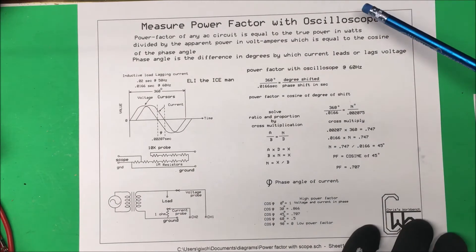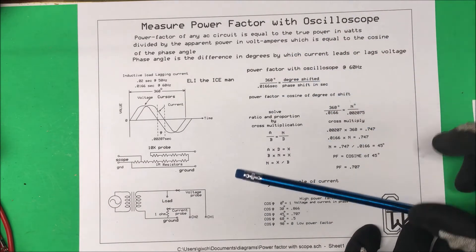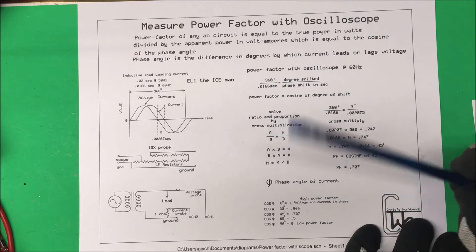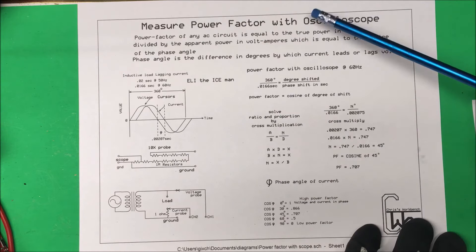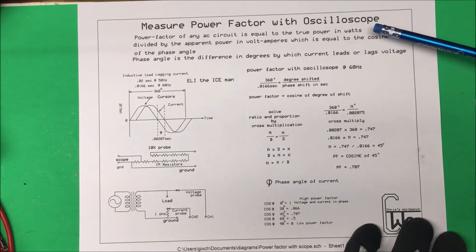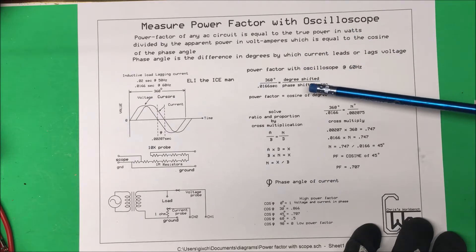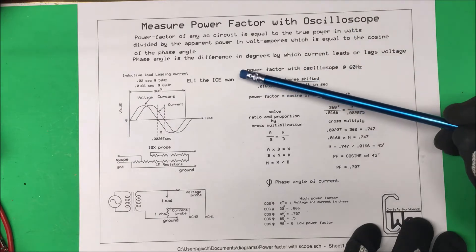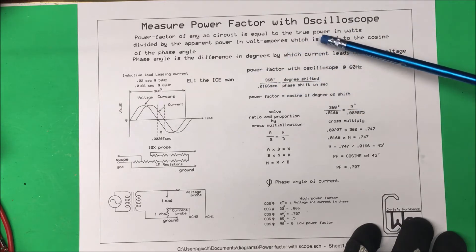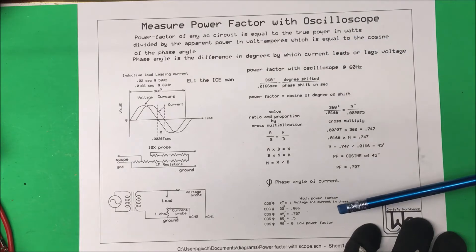Let's measure your power factor with an oscilloscope. The power factor of any AC circuit is equal to the true power in watts divided by the apparent power in volt-amps, which is equal to the cosine of the phase angle. The phase angle is the difference in degrees by which the current leads or lags the voltage.